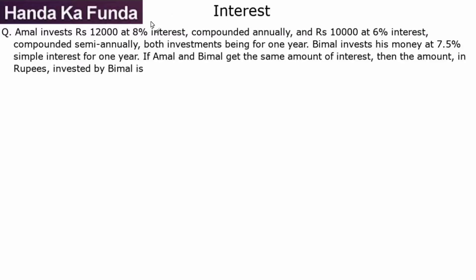Hi everyone, I'm Ravi Handa, founder of the website handagafunda.com. Welcome to another solved example on interest. Amal invests 12,000 rupees at 8% interest compounded annually, and 10,000 rupees at 6% interest compounded semi-annually. Both investments were done for a period of one year. So after one year, how much returns will he get?